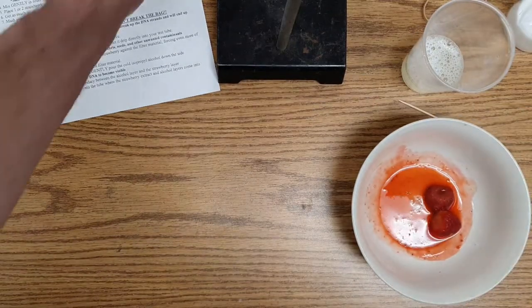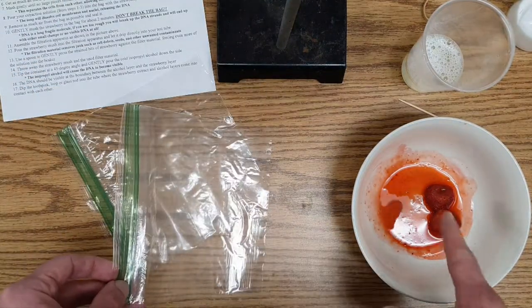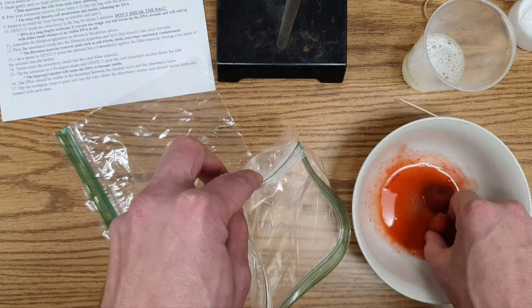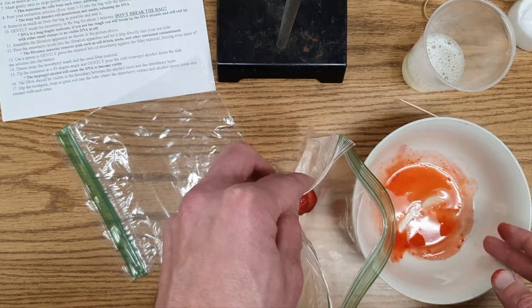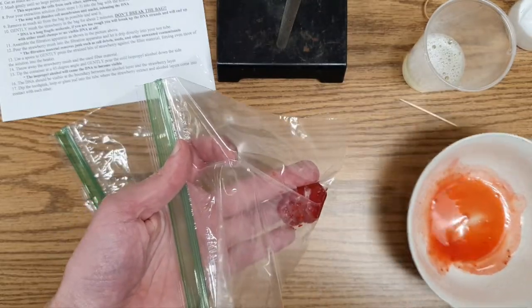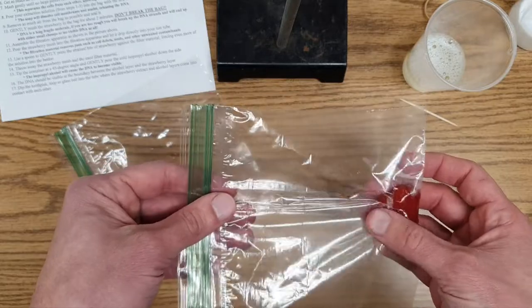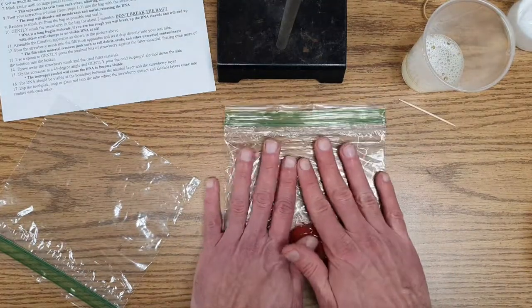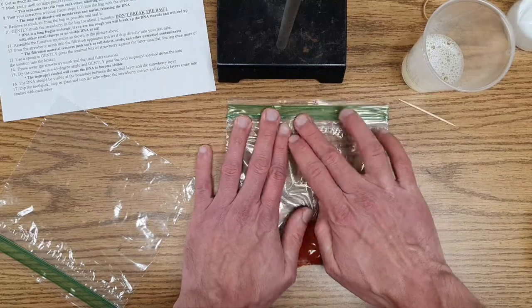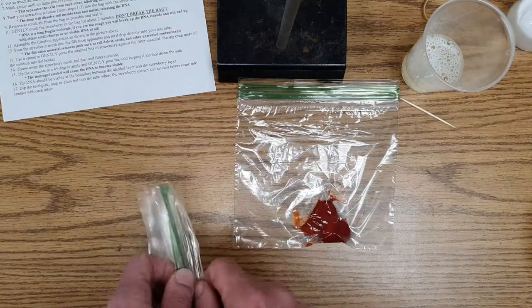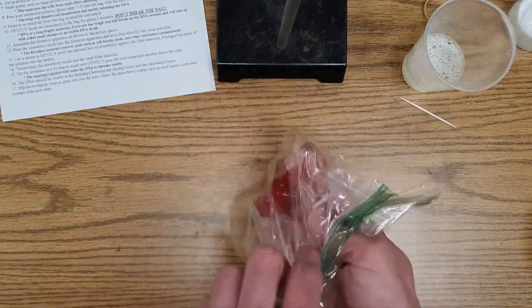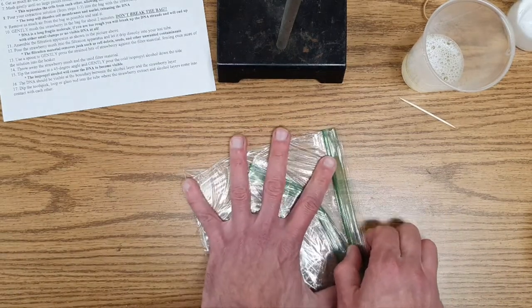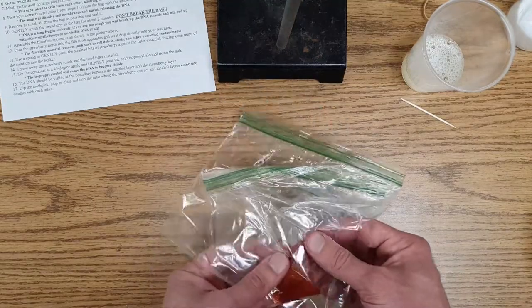Now it's time to get the strawberries into your bags. You need to use these in order to mash these up. You won't get any DNA if you don't mash these up first. Got one strawberry, got two strawberries. It's okay if a little juice is left behind. There's going to be plenty of DNA in there. What you want to do is make sure to get as much air out as possible. Once you've got the air out, seal it, and then we're going to get one bag inside of the other. This is just protection in case it breaks.